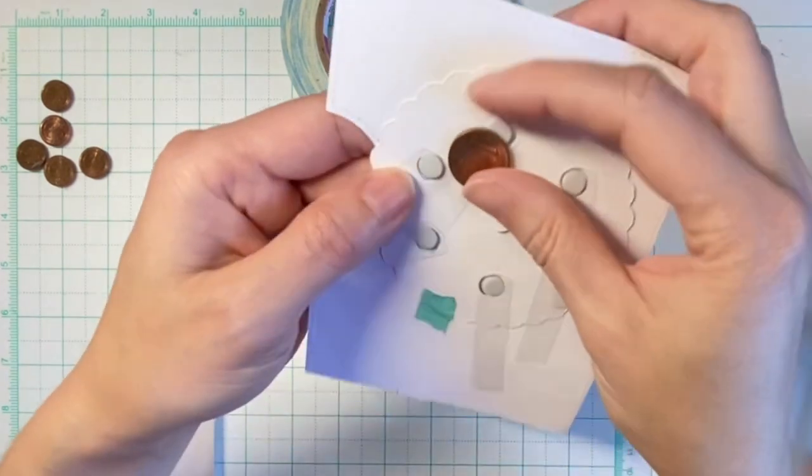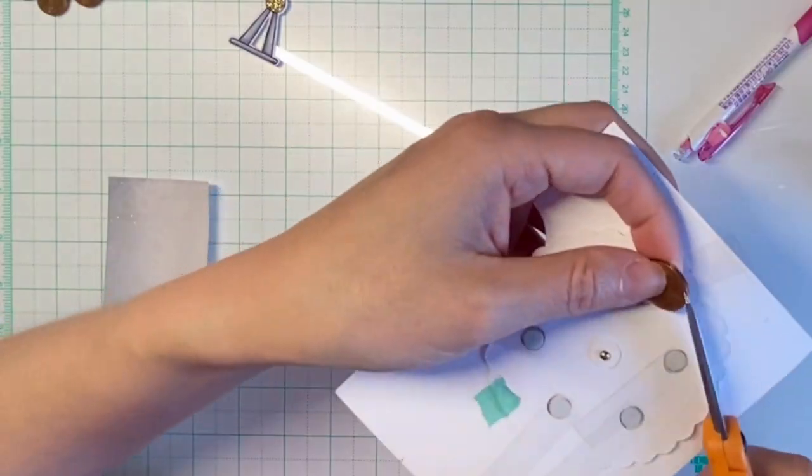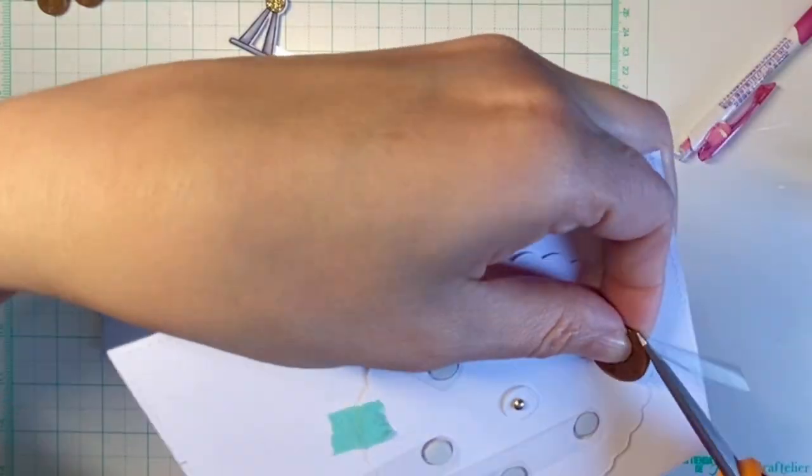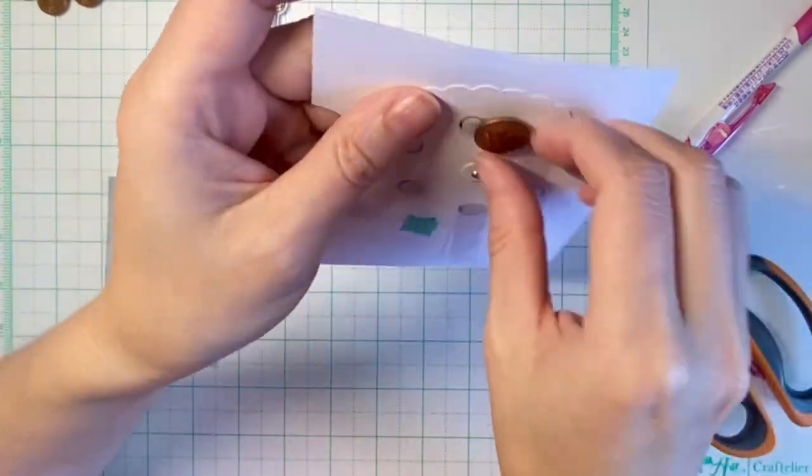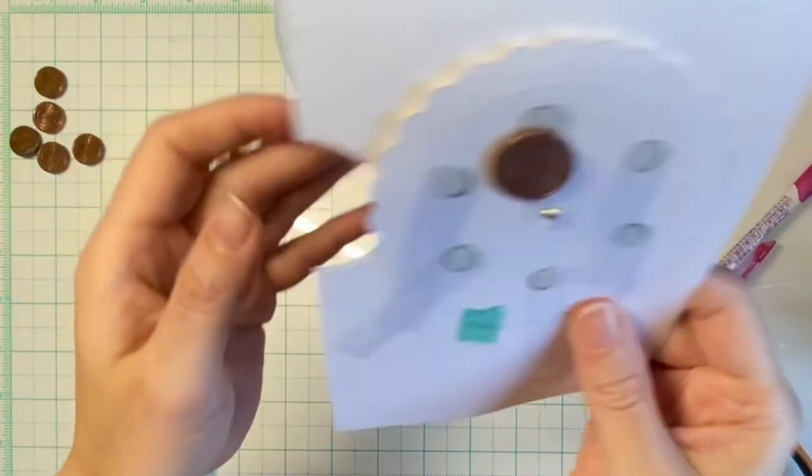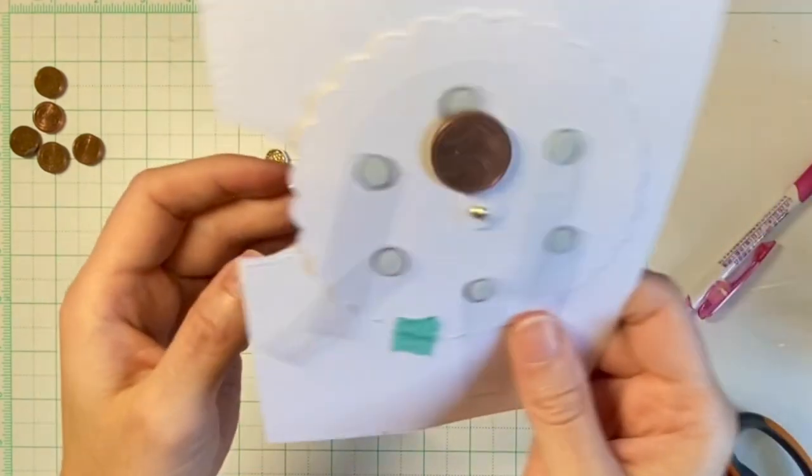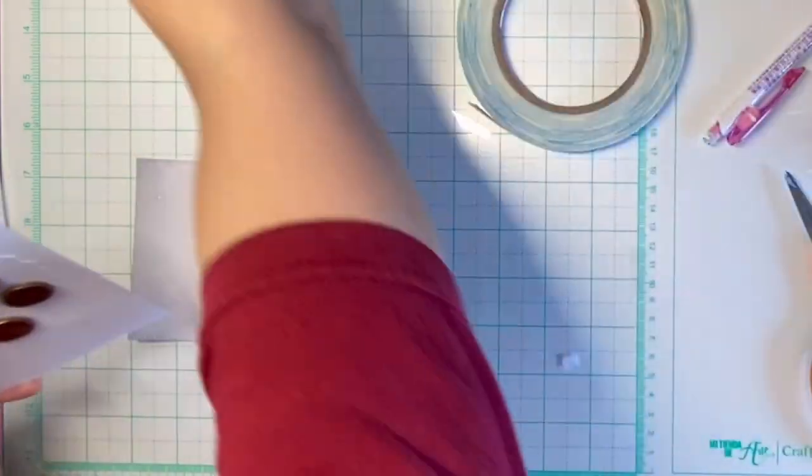I used strong double sided adhesive tape to attach the penny and kept checking that it won't collide with any other part. Then I cut down the acetate strip and checked if it can rotate freely. And then I will repeat the same step for the remaining five gondolas.